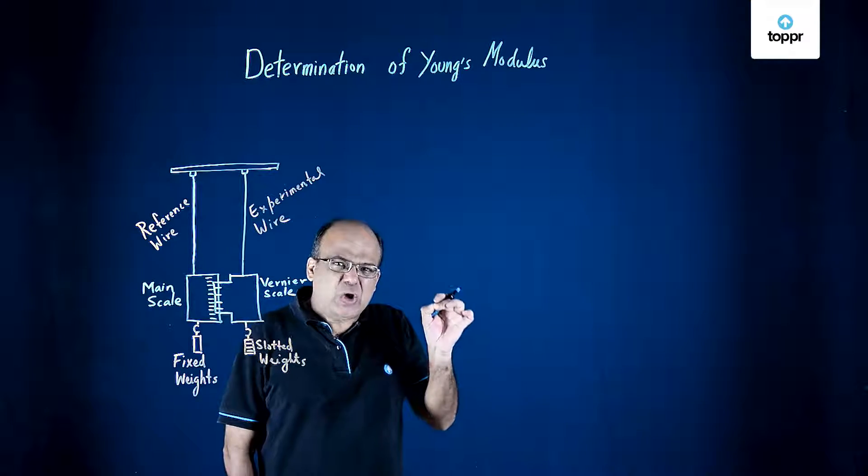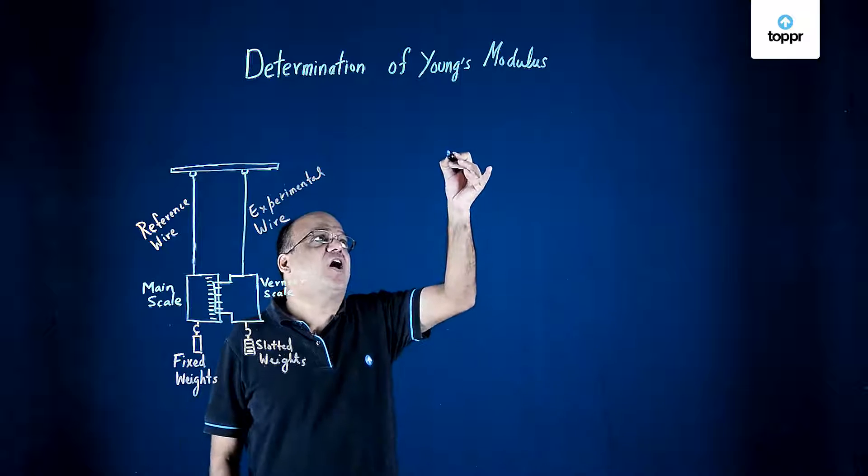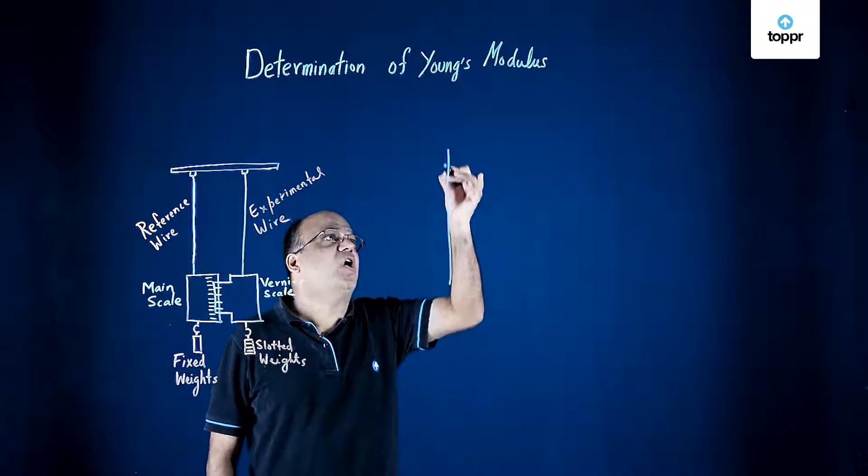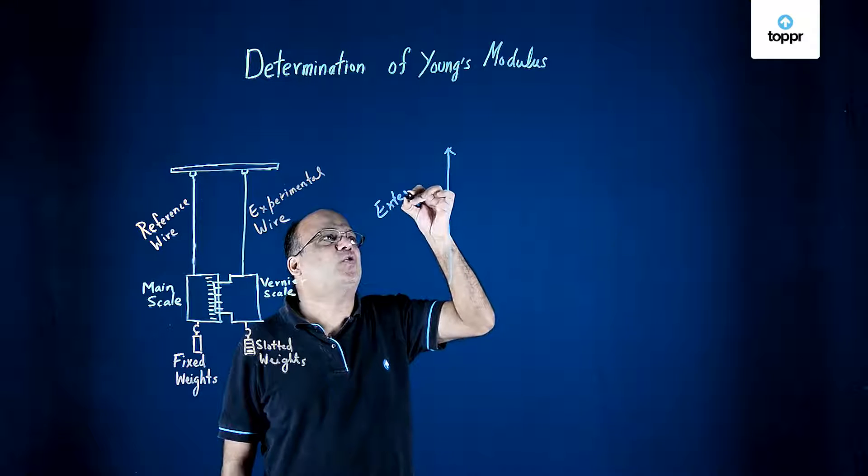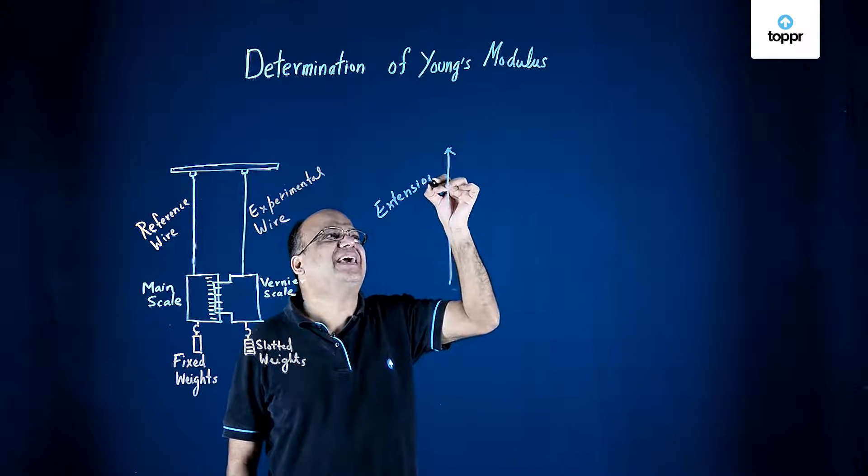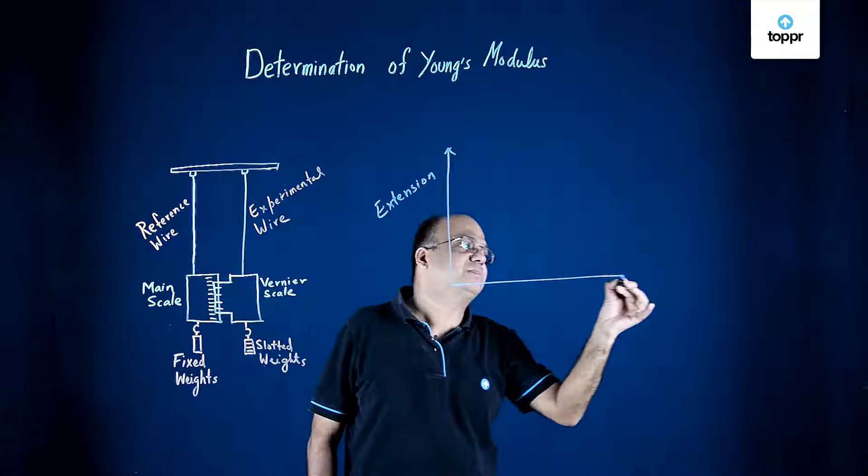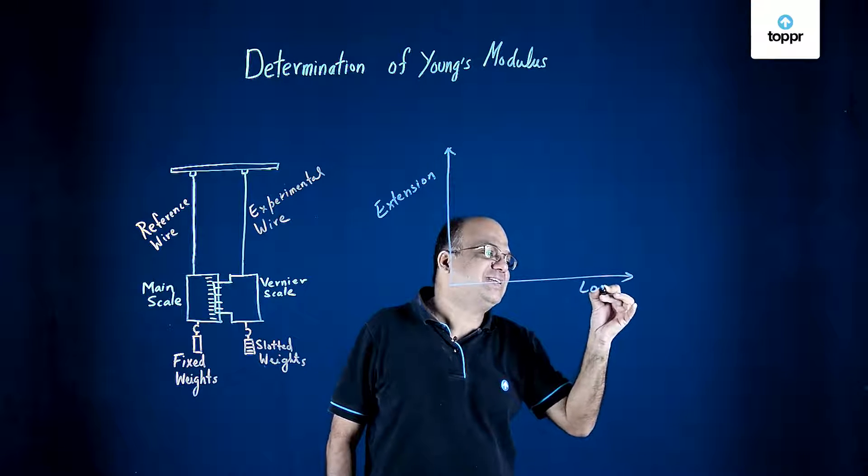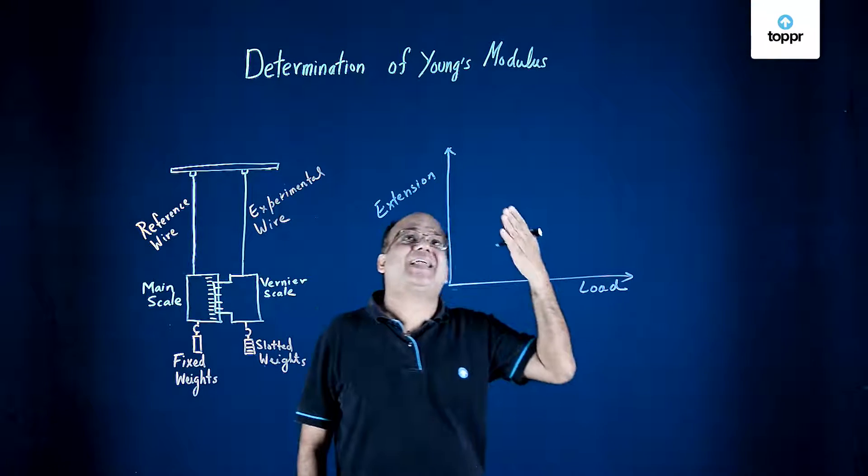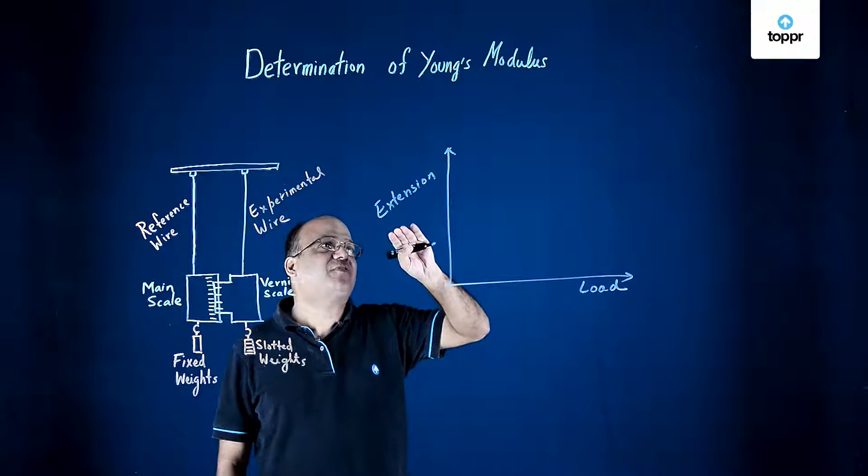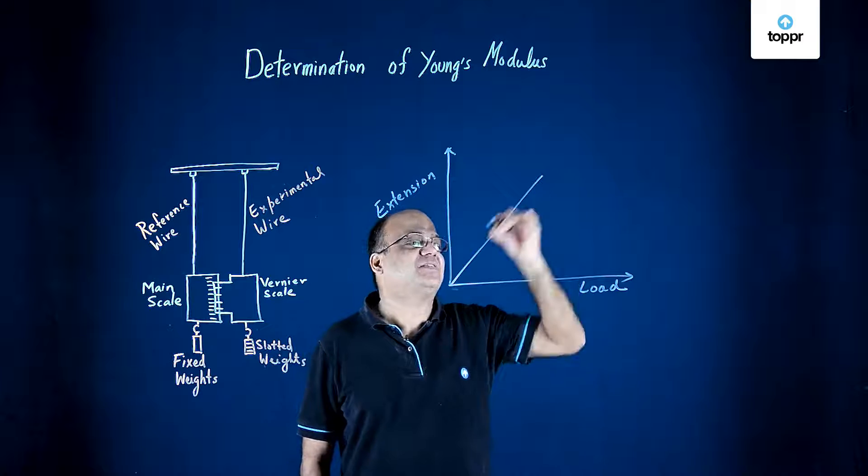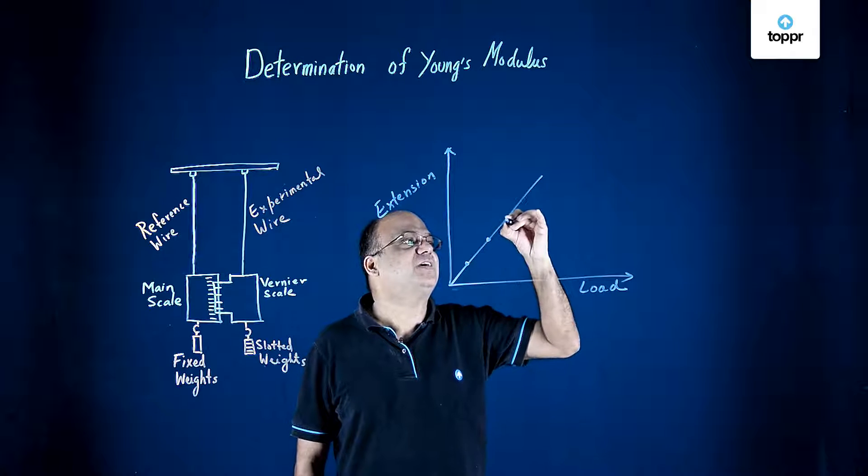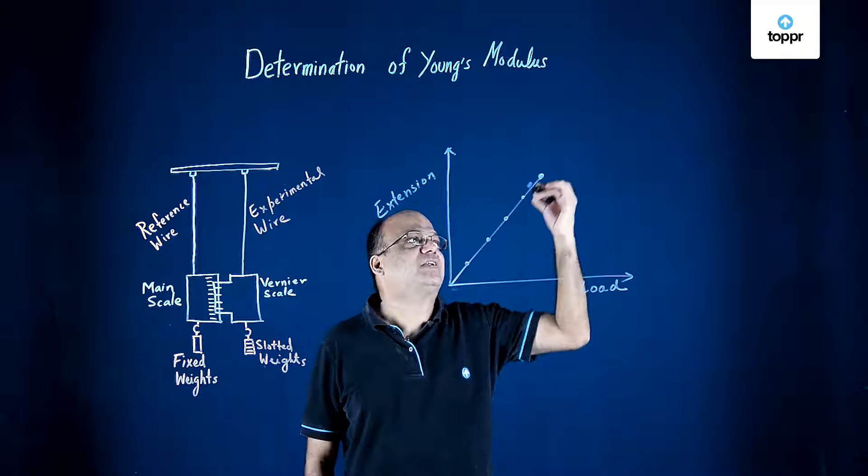After this, we will draw a graph of extension on the y-axis and load on the x-axis. So we have collected the data of load and extension. Now we draw a graph of extension on the y-axis, load on the x-axis. We will get a straight line. So these will be say 5 readings we have taken.